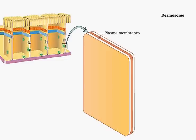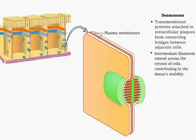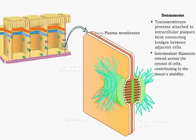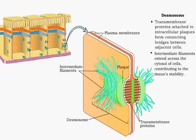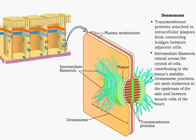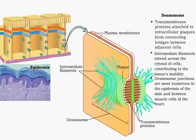The desmosome is similar in structure to the adherence junction, except that intermediate filaments extend into the cytosol of each cell. These junctions help provide stability to tissues and are abundantly found in the epidermis of the skin and between the muscle cells of the heart.